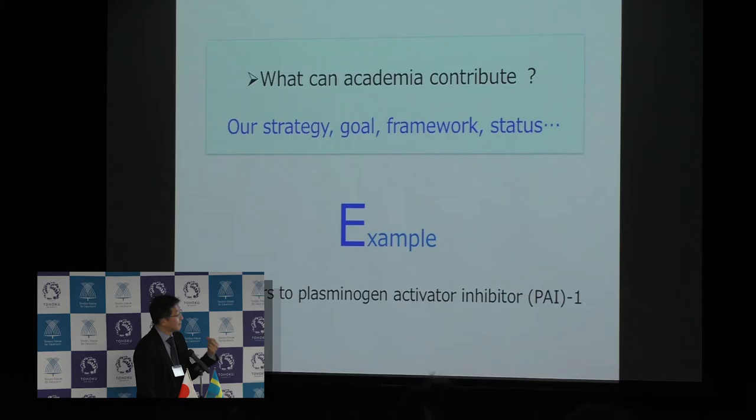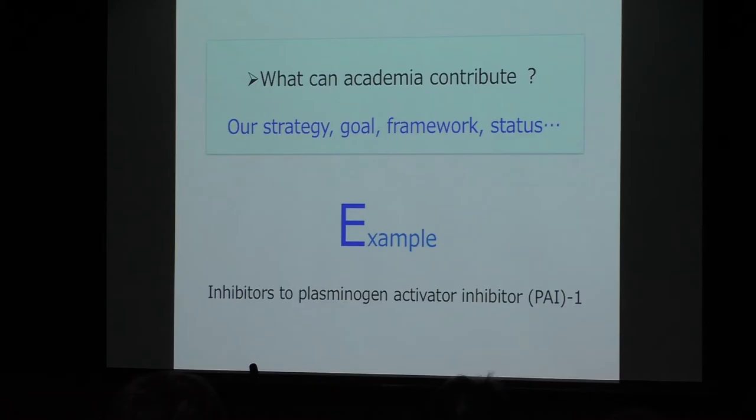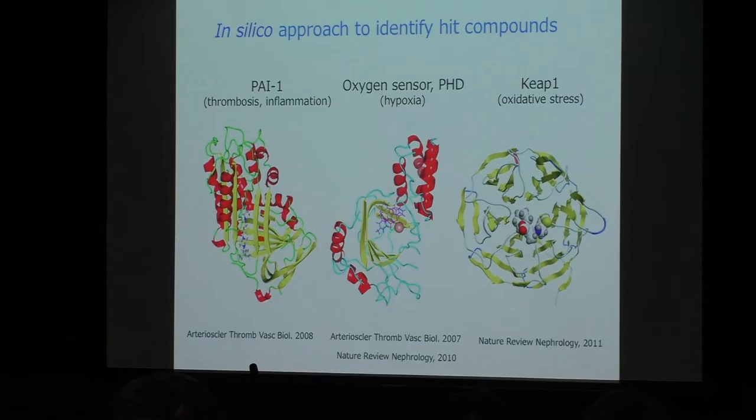Rational drug discovery and efficient clinical development has been our priority. So let me ask what we in academia can contribute in this direction. What are our strategy, goal, framework, and status? I would like to elaborate on this by exemplifying our project to develop an inhibitor of plasminogen activator inhibitor, PAI-1.